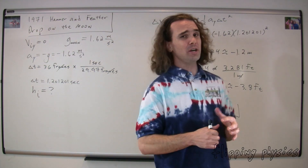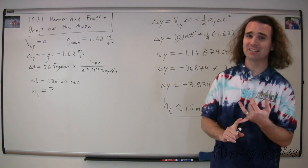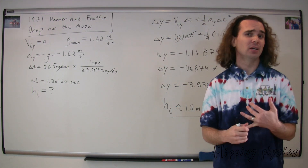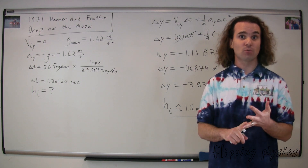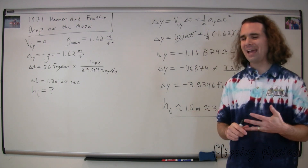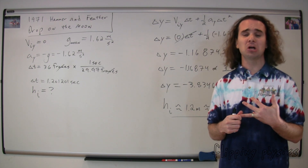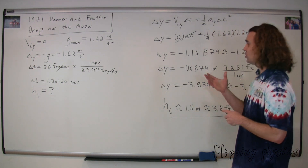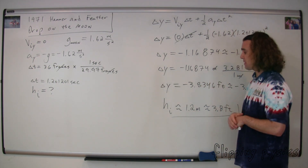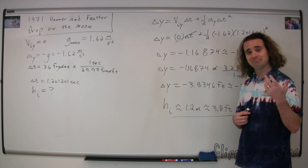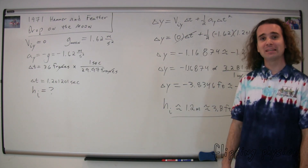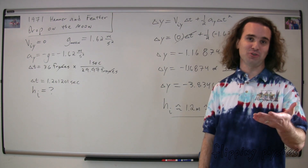Any other questions? Cool video. In that case, realize that we just took a video filmed in 1971 on the moon, which has almost no atmosphere, and therefore the hammer and the feather were truly in freefall. We counted the frames to figure out how long they were in freefall, and used a UAM equation to figure out the initial height of the hammer and feather above the ground. I think that's pretty cool. Thank you very much for learning with me today. I enjoyed learning with you.